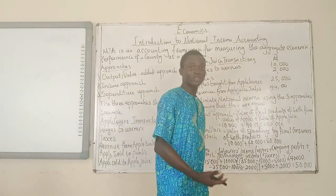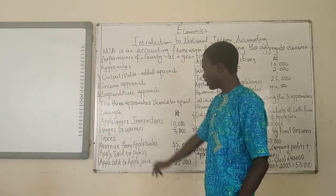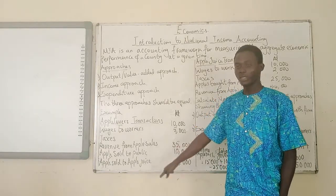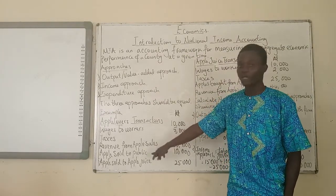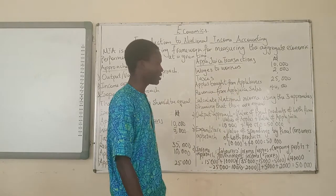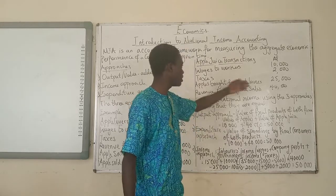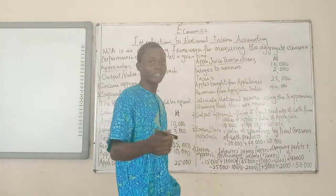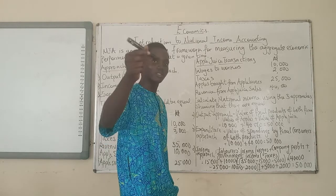Now let's look at the expenditure approach. The expenditure approach is talking about the spending on the final goods. There are two different spendings here: apples sold to the public and apple juice sold to the public — these are the spendings on the final products. So we have 10,000 Naira, which is the spending on apples by the public, plus 40,000 Naira, which is the spending of final consumers on apple juice — giving us 50,000 Naira. Just as in the earlier example, what is produced equals what is paid for it.